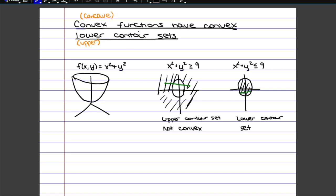So the theorem just says that in general, if you have a function that's convex like this one, the lower contour set, for example, this one x-y squared is smaller or equal to 9, is going to be convex.